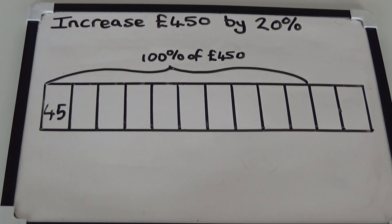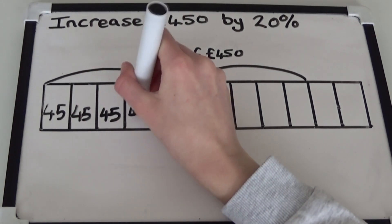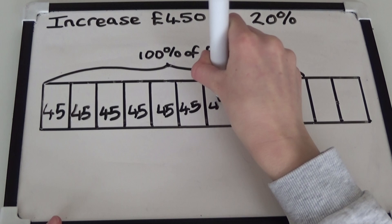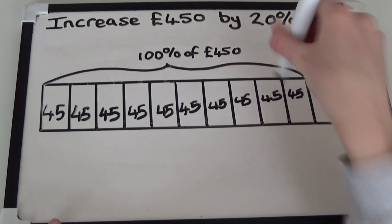I'm going to fill in the rest of the bar model with 45s. Now we have calculated 10% of £450, we can use this to calculate the cost of the laptop after the 20% increase.